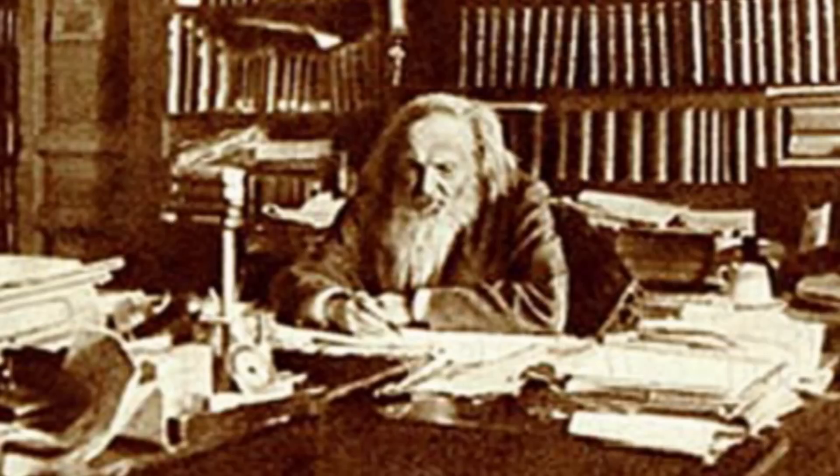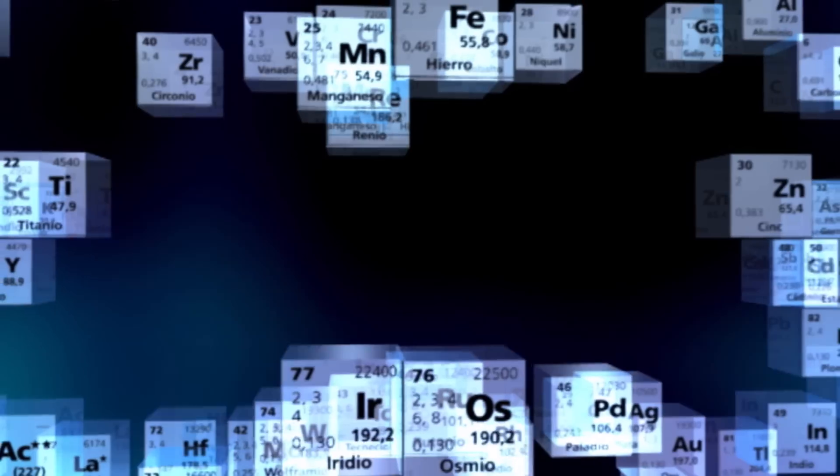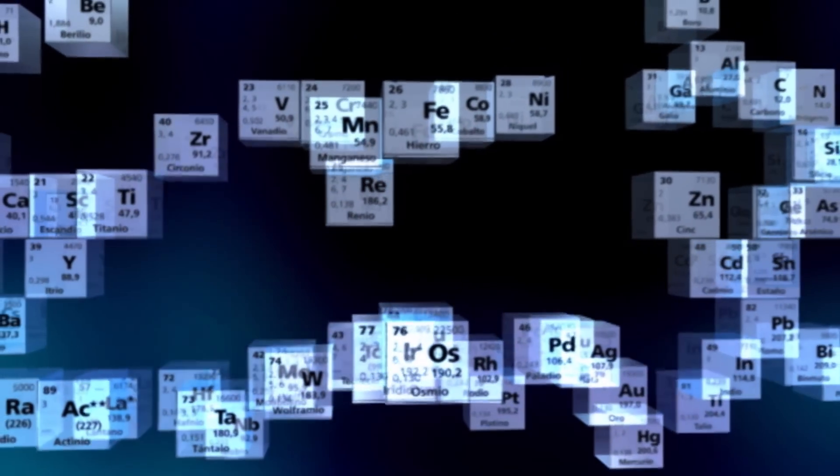Mendeleev carried his ideas out. He classified the 63 chemical elements known at that time according to their various properties. And this was the result: the periodic table.